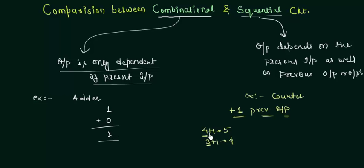How is the previous output stored in a sequential circuit? It is stored by a memory element that we call flip-flops, which is a very important component in this digital electronics course.